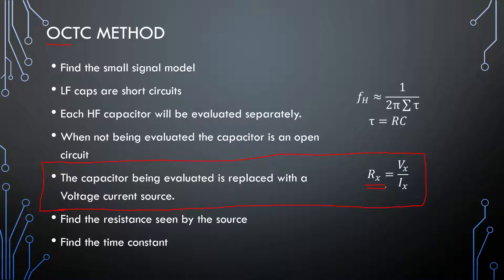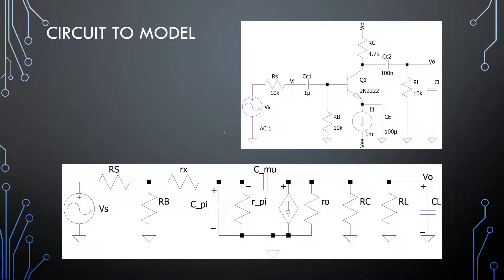This is typically the way that you apply it, but C_mu is the difficult capacitor. Let's have a look at our common emitter circuit. We have a current source, a voltage source, and some DC sources. All low frequency capacitors become short, so this terminal will be grounded, this capacitor will remain, that one is a short, and VCC becomes a ground. The high frequency model for our common emitter amplifier will look like this, where Rx is our transistor model, and we need to deal with C_mu.